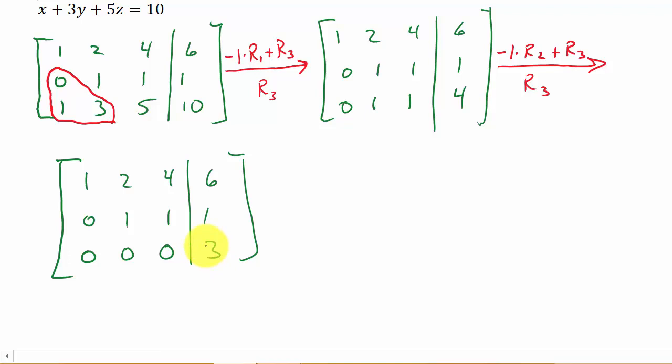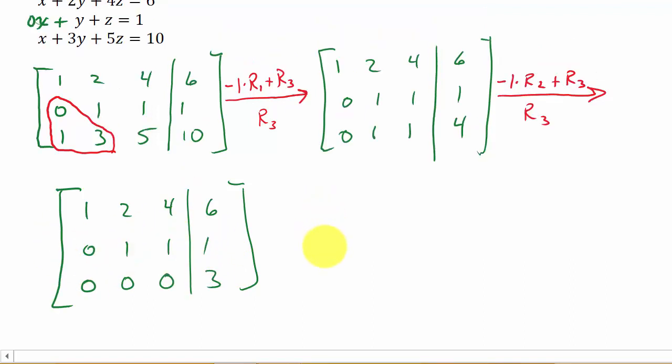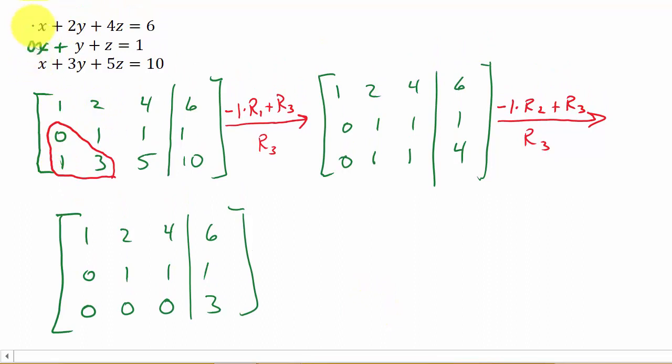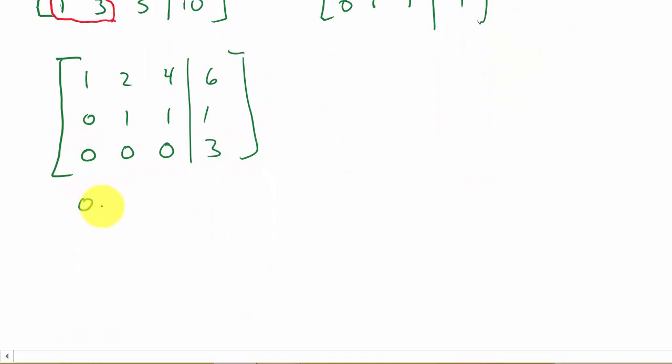So, you can see what happened here. If we rewrite this back as an equation, notice this first column here. That's the coefficient of the x terms. This is the coefficient of the y terms. And this is the coefficient of the z terms. So you can see that this row states that 0 times x plus 0 times y plus 0 times z equals 3. Well, the left-hand side here is just 0 equals 3. Our variables went out. Is this a true statement? No. 0 does not equal 3. So that means we have no solution.